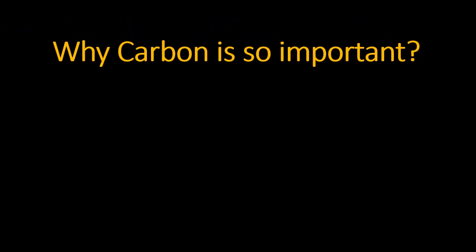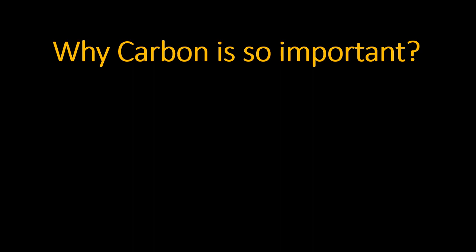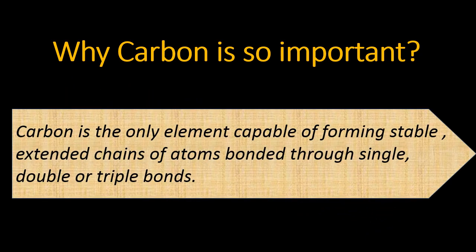Now, why is carbon so important? Carbon belongs to group number 4A, having four electrons in its outermost shell. Carbon is the only element capable of forming stable extended chains of atoms bonded through single, double, or triple bonds.